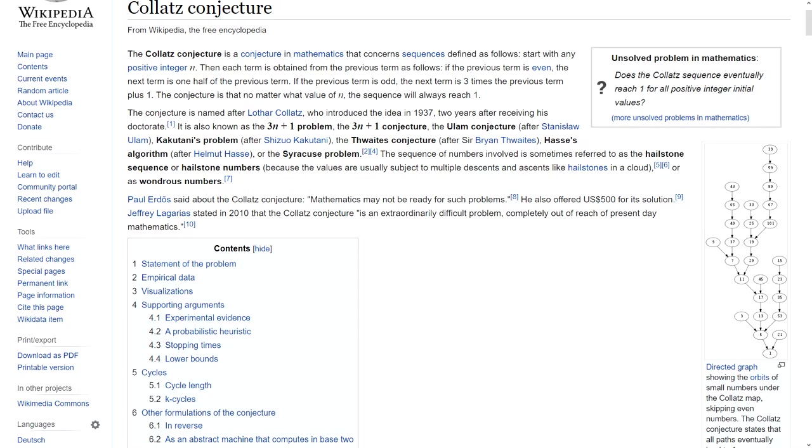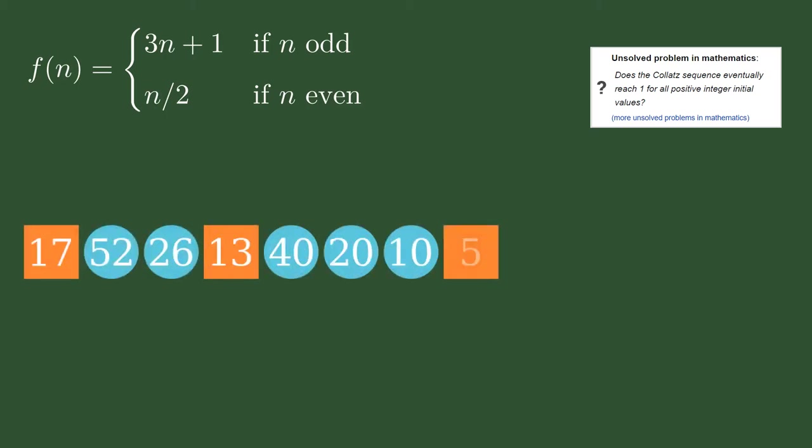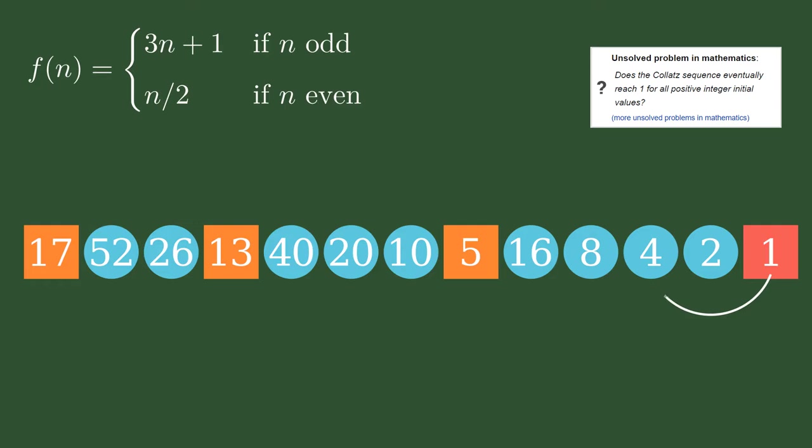There are already a lot of good videos on the Collatz conjecture, so we're not going to spend too much time on the basics. The conjecture is related to the repeated application of this function to a starting positive integer seed. It postulates that every starting seed will eventually reduce to 1.